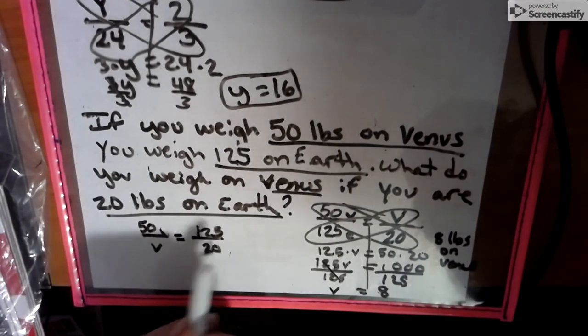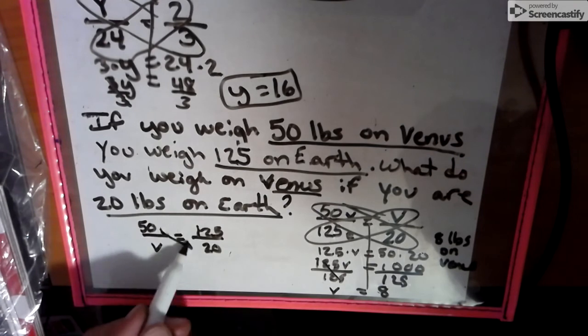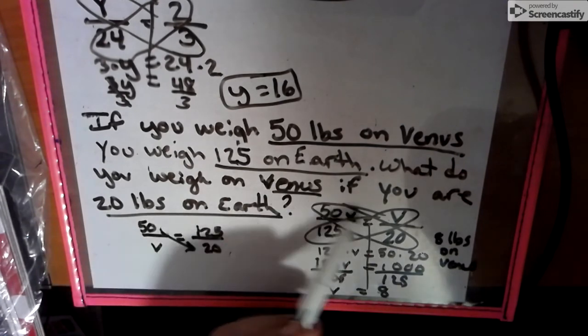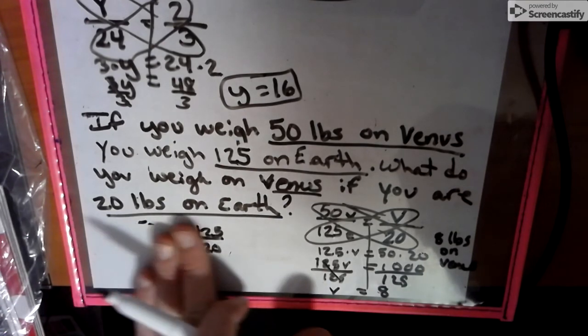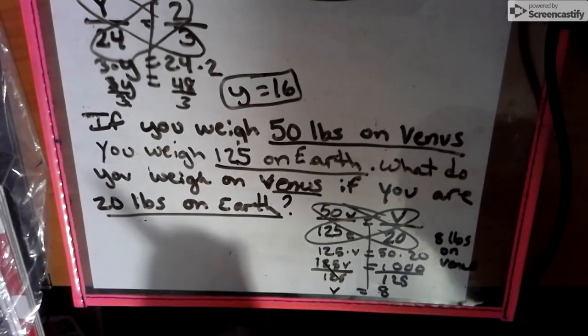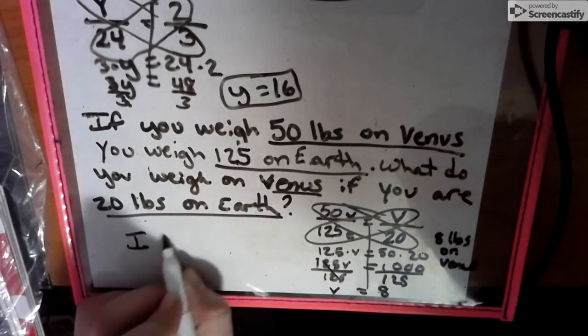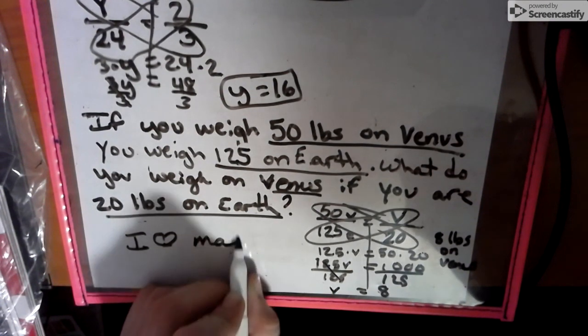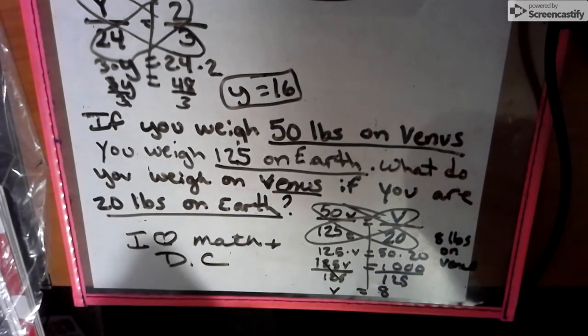Look at my diagonal. It's still the same as my 50-20. So, it doesn't really matter. There's four different ways that you can write a proportion. So, it's just how you show it. And we'll work on more of that in class. And, as always, I love math and DC.